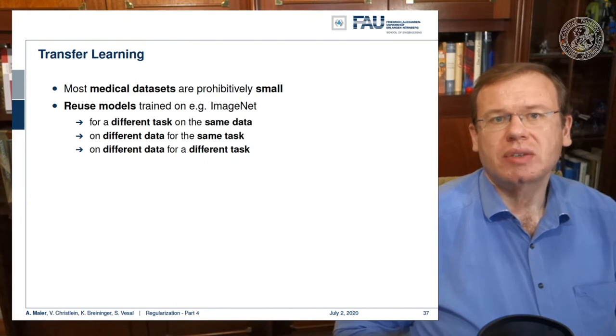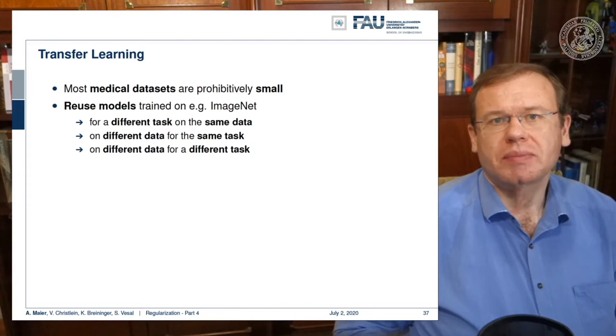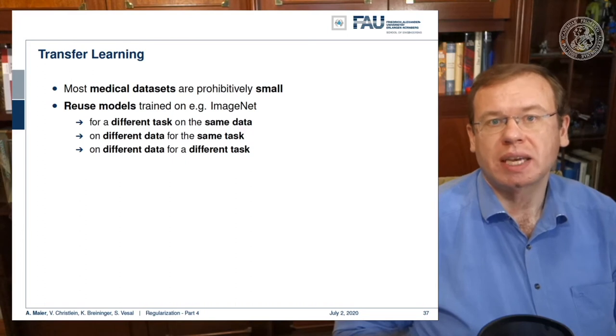So the idea is to reuse models, for example, trained on ImageNet. Then you can reuse things that have been trained on a different task for the same data, or you can use different data for the same task, or you could even do different data on different tasks.